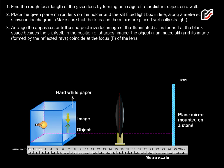Arrange the apparatus until the sharpest inverted image of the illuminated slit is formed at the blank space beside the slit itself. In the position of sharpest image, the object, illuminated slit and its image coincide at the focus F of the lens.